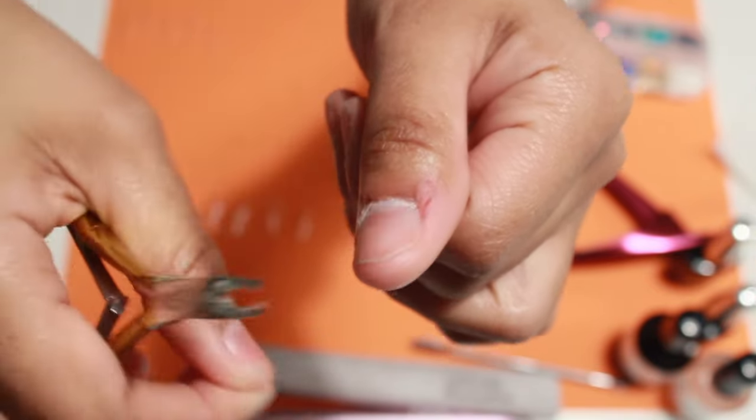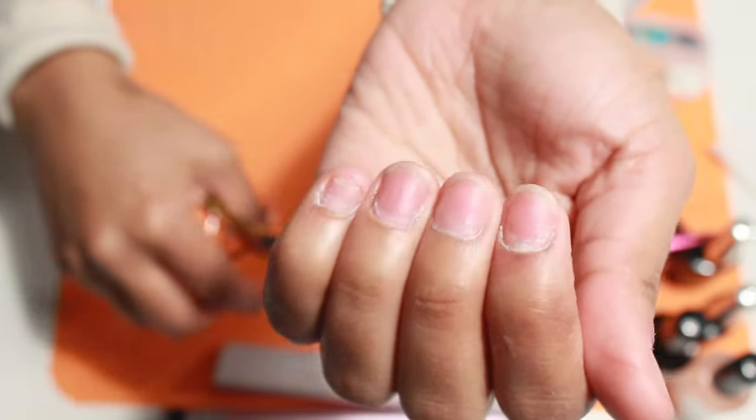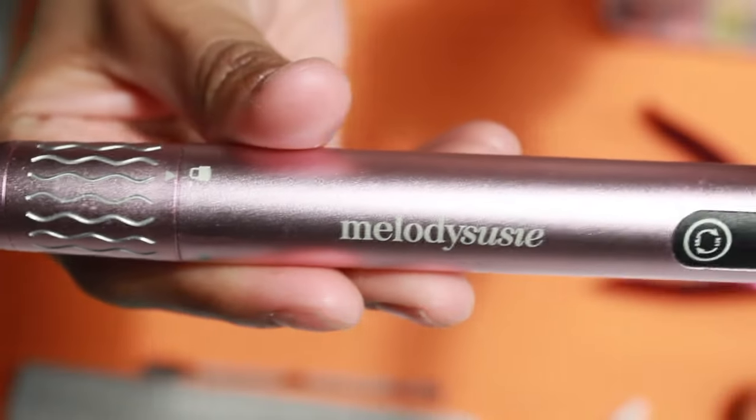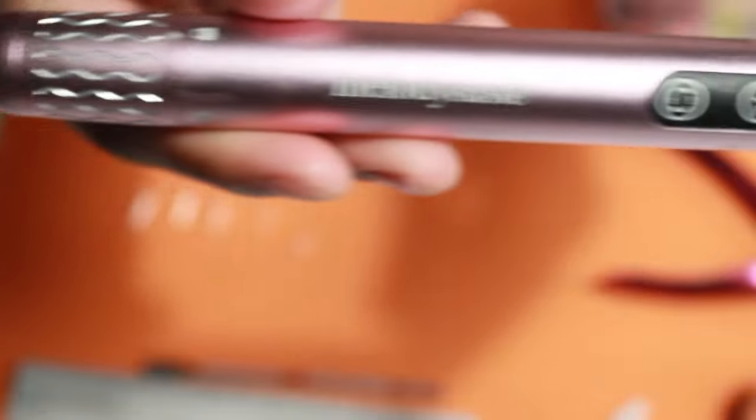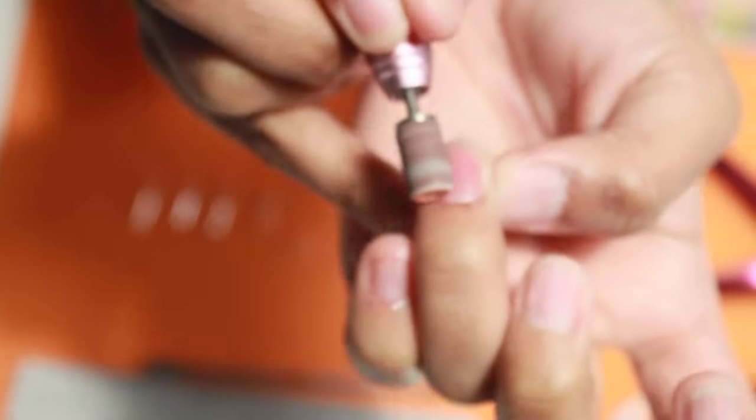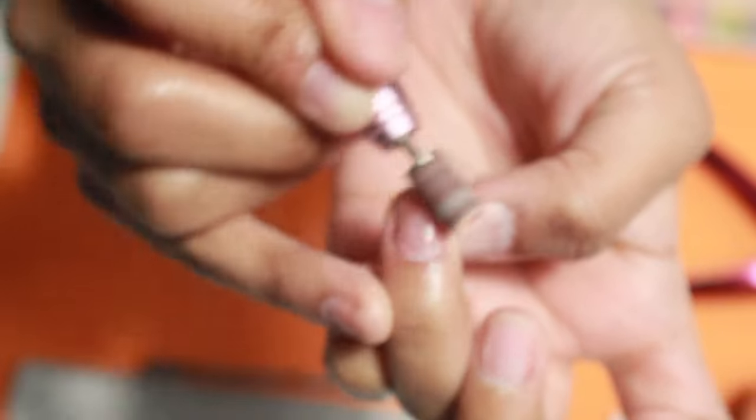So I just took off some of that cuticle, pushed back my cuticles, and I'm going in with my Melody Susie drill. With this drill I am using a coarse grit here, so that is what I am using to remove the shine from my nails and get them all ready for tips.